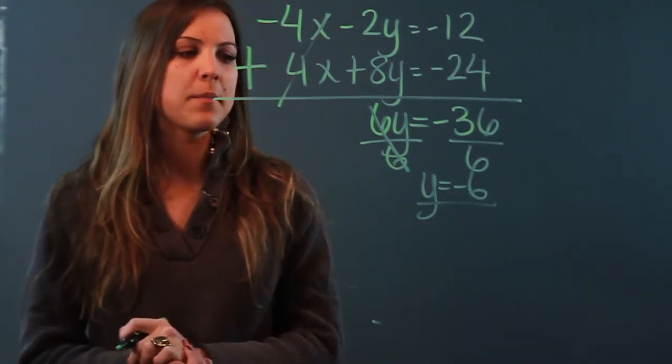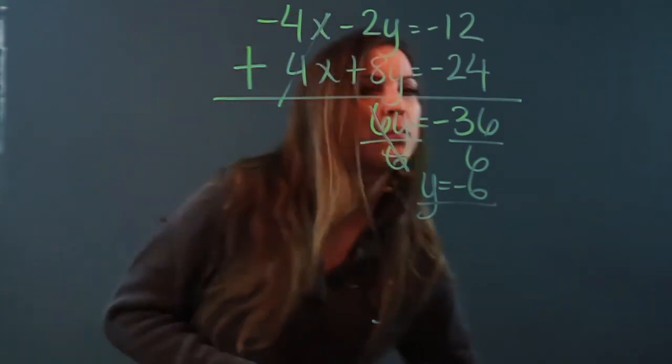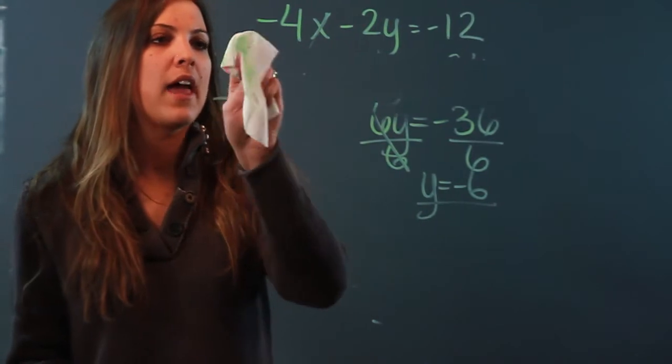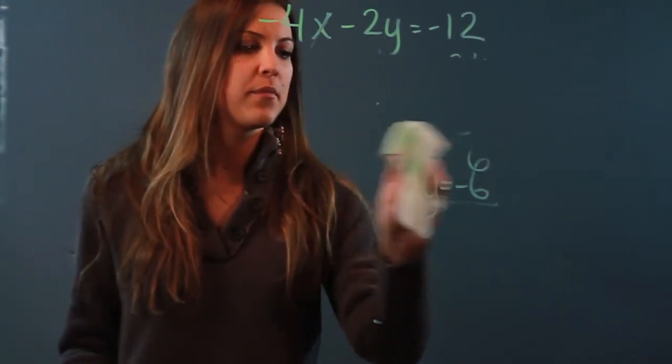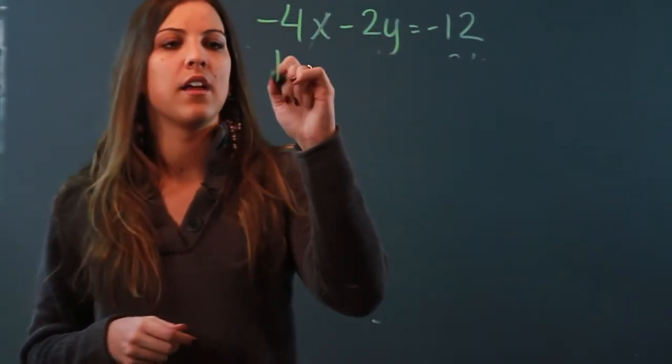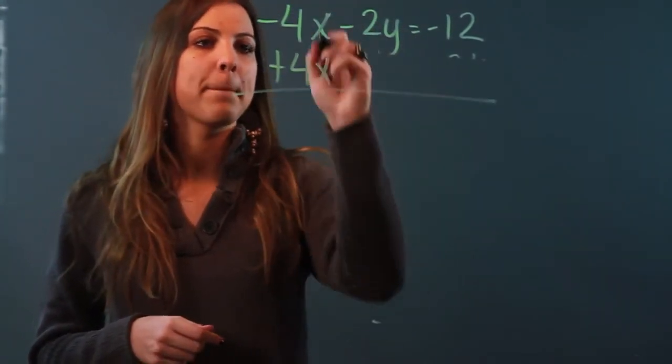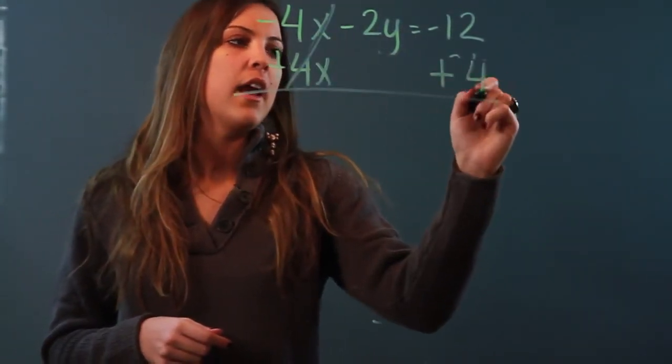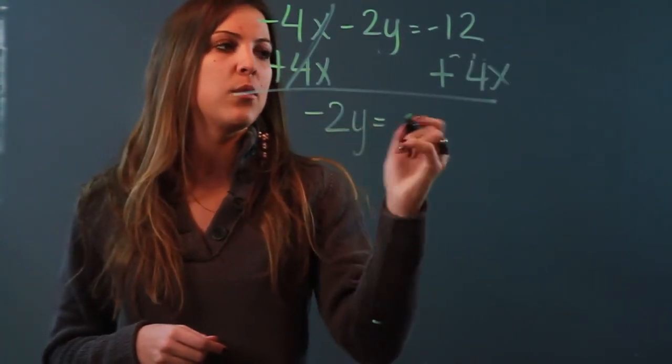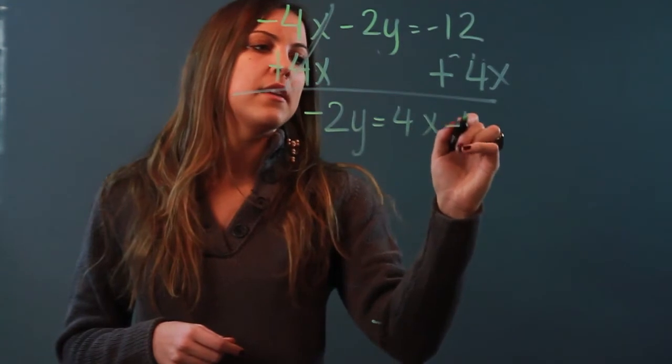So if I wanted to substitute and solve for y I'd have to start by adding 4x to both sides. So if we add 4x to both sides the ones on the left will cancel out and on the right I can't combine them because they're not like terms. So I'm going to have negative 2y equals 4x minus 12.